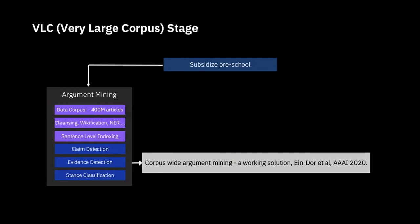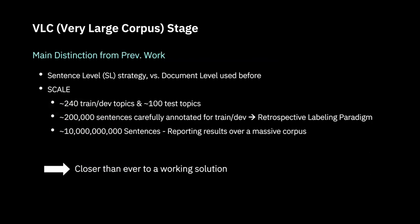Because of this, we later switched to the second stage — I call it the very large corpus stage. Instead of using Wikipedia, we used a corpus containing around 400 million articles from LexisNexis. Instead of doing document-level retrieval, we do sentence-level indexing and retrieval. We had an AAAI paper this year describing this system, and in the following I will briefly walk you through it.